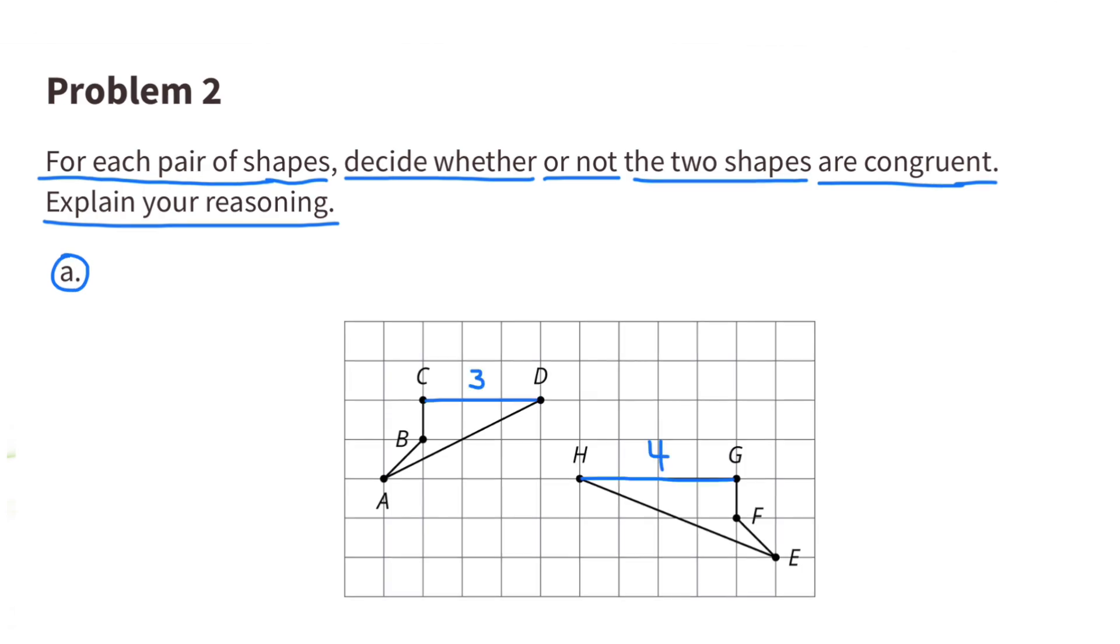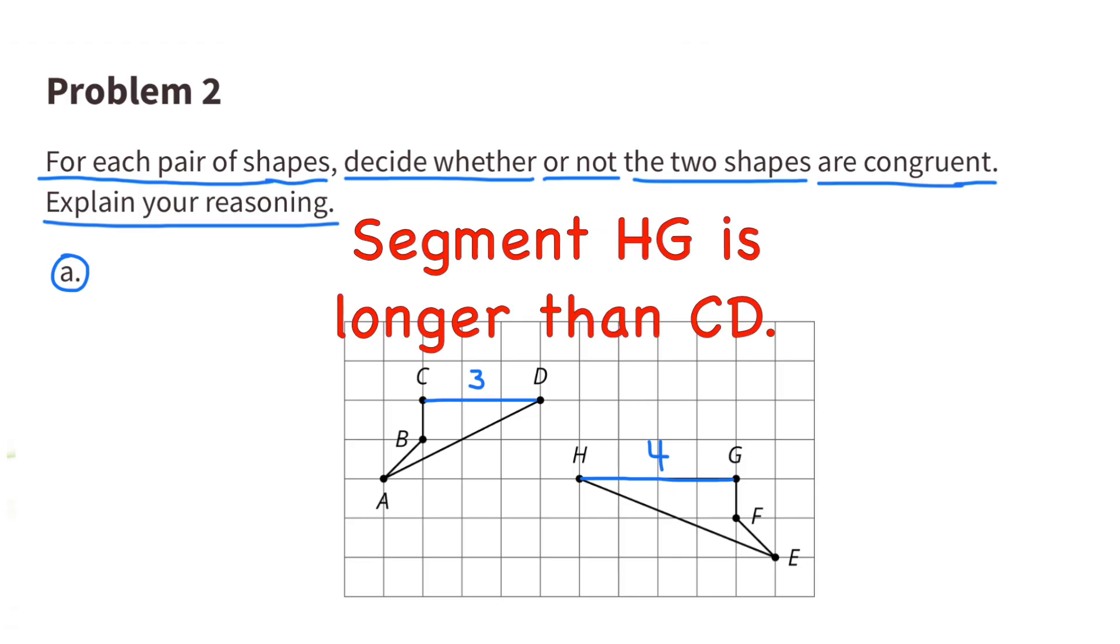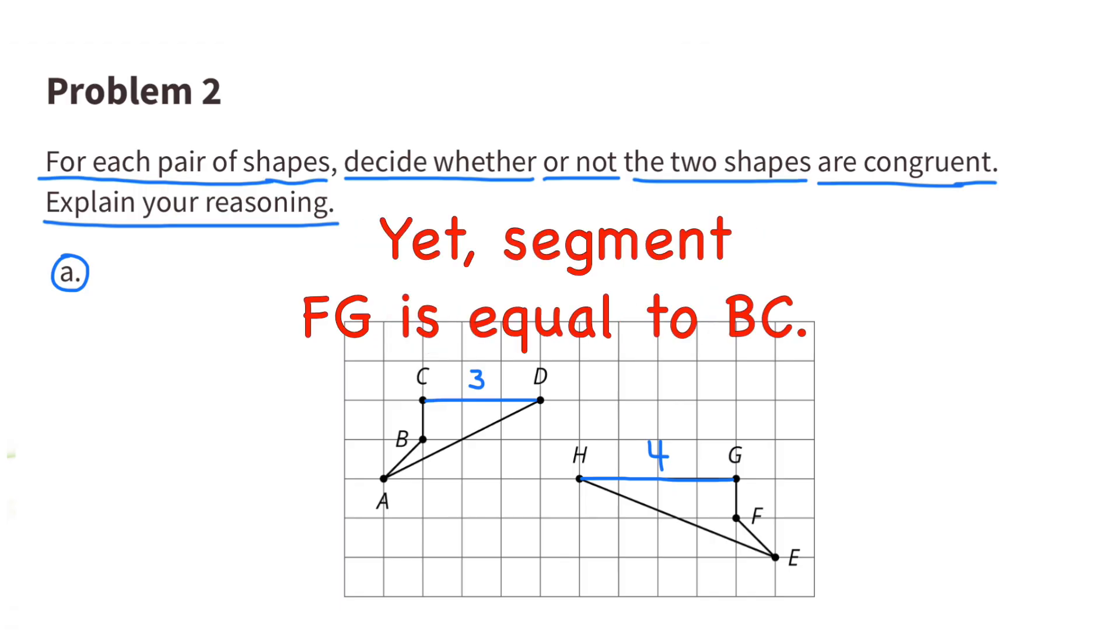Line segment C.D. measures 3 on the first shape and line segment G.H. measures 4 on the second shape. Yet line segments B.C. and F.G. have the same measure. These two shapes are not congruent. Segment H.G. is longer than segment C.D., yet segment F.G. is equal to segment B.C.